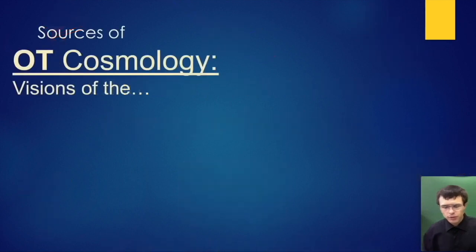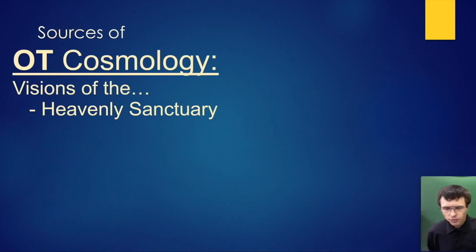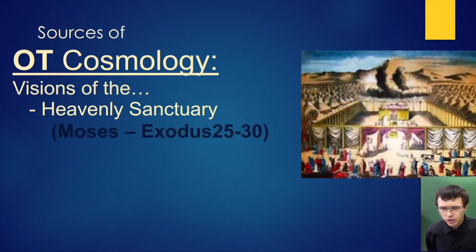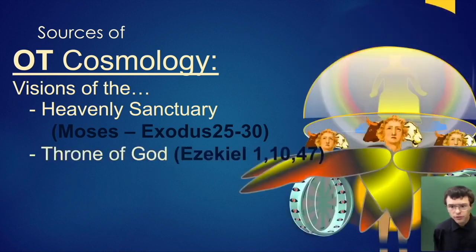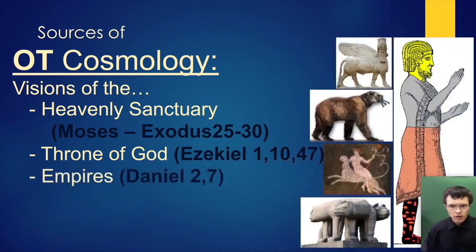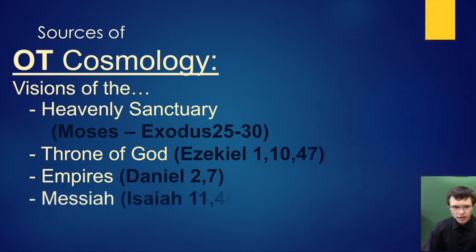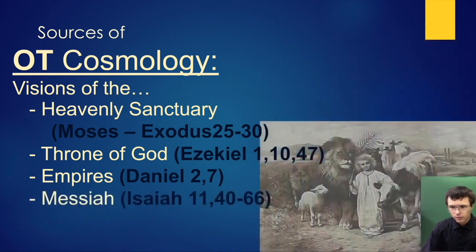Before we begin, we should go through the sources of where this comes from. First, it comes from Old Testament cosmology, especially visions of the heavenly sanctuary by Moses, also of the throne of God in Ezekiel carried about on top of the cherubim, also of the empires in Daniel, and greatly of the Messiah motifs in the last half of Isaiah as well as Isaiah 11.